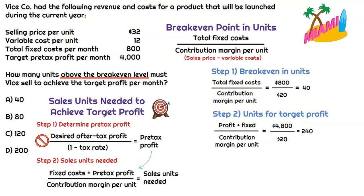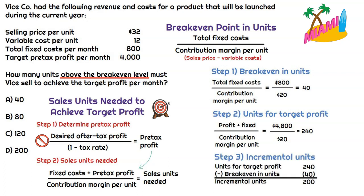That's not where we stop, because we need to understand the incremental amounts above break-even. What we could have done is just taken the desired pre-tax profit per month of $4,000 divided by contribution margin per unit of $20, and that tells us the incremental amounts needed to earn that profit above break-even would be 200 units. But we can also just take the difference — step three — between the units for that target profit of 240 and subtract the break-even point in units of 40. That means Vice Company needs to sell 200 incremental units above break-even to earn that target pre-tax profit per month of $4,000.